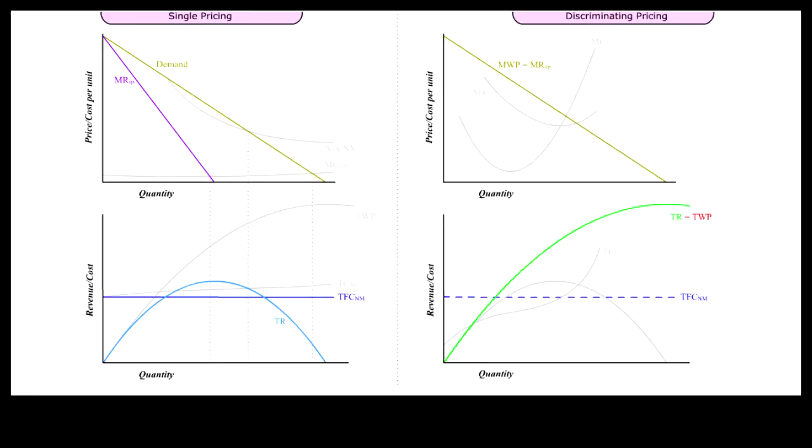Observation 1: Fixed cost is very high with the natural monopoly compared with the low fixed cost model.